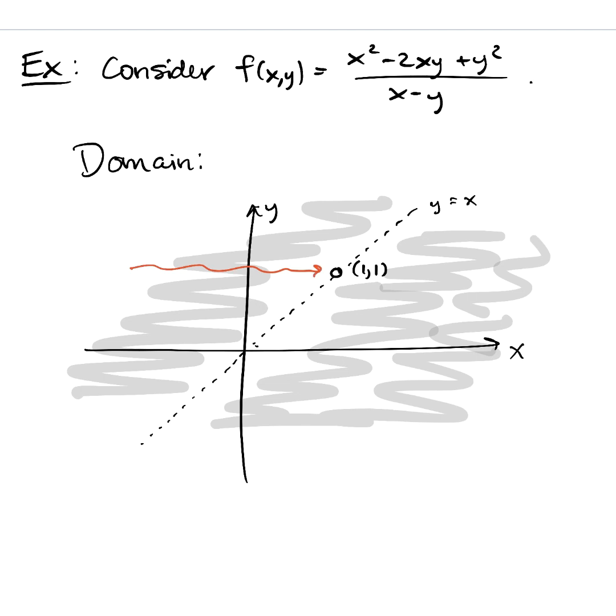Think about all the different paths towards that point. There's this kind of boring path towards one one. There's that path. There's this funky curly Q path. You can march towards that point in infinitely many different ways. And what we're trying to decide is, well, however you're marching towards that point, is the function well behaved? What's the value of this function as you get closer and closer to one?